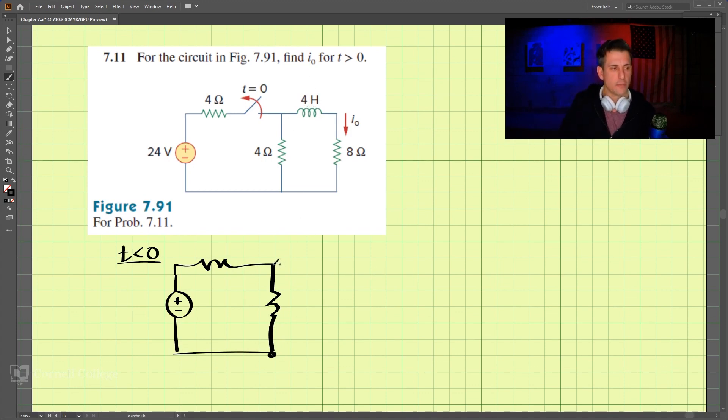The inductor becomes a short circuit, and then we have the resistor here. So this is a short circuit here, and we have 8-ohms, 4-ohms, and 4-ohms over here. So for this is 24 volts.